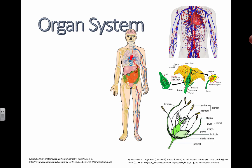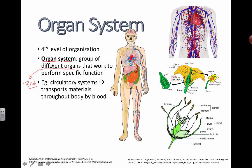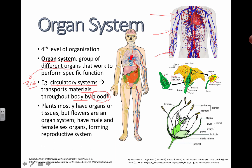Now we get to the fourth level, where we combine things from the third level. The fourth level of organization is an organ system: a group of different organs that work together to perform a specific function. For example, the circulatory system is basically your blood system — it transports materials throughout the body using blood. If you get a cut and start bleeding, you're losing the liquid that's supposed to carry things around.